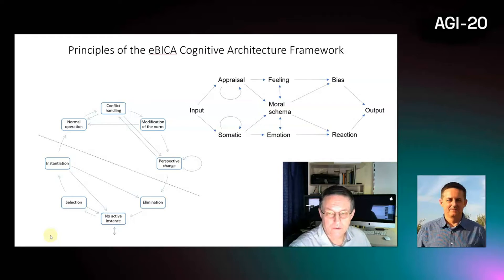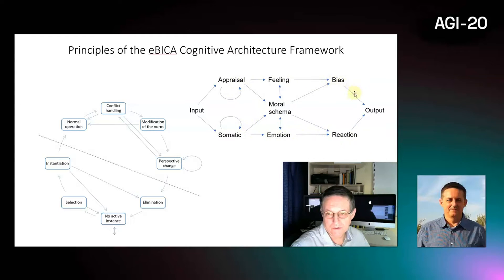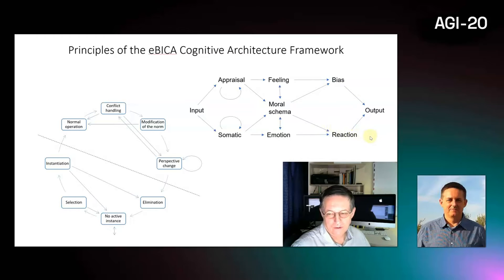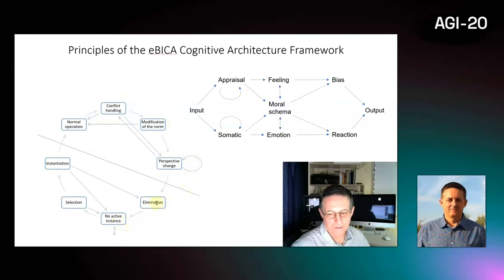These diagrams show the logical scheme of operation of the EBAICA Cognitive Architecture. The diagram on the right top shows two parallel threads including somatic information processing and appraisal processing, both interacting with the moral schema that eventually determines the bias in decision making, behavioral choice, and also involuntary reaction expressing the emotional state of the agent. The moral schema itself undergoes a certain life cycle starting from its instantiation to normal operation, then possibly conflict resolution and other stages, up to its possible elimination from the working memory.